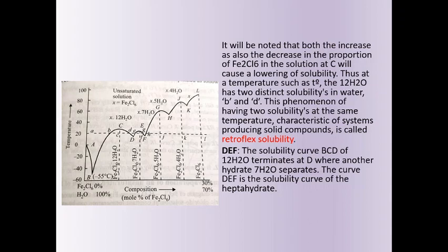As we continue adding ferric chloride, the solubility curve BCD terminates at point D, where another hydrate gets separated. At point D, FeCl₃·7H₂O separates out. The curve DEF is the solubility curve for heptahydrate (FeCl₃·7H₂O).